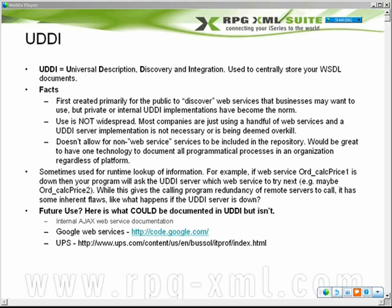UDDI is sometimes used for lookup information, but it's also used for real-time processing — which I think is kind of silly. What I've seen it used as is a failback mechanism: if you make a call to a web service and it isn't up and you time out or it fails, you can use UDDI to find a second URL to call, giving you redundancy built in.